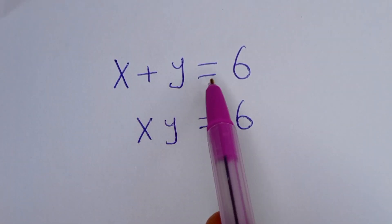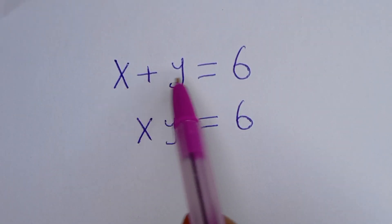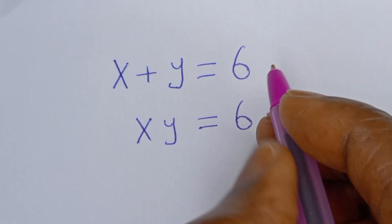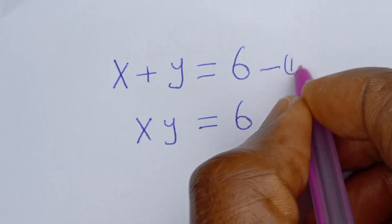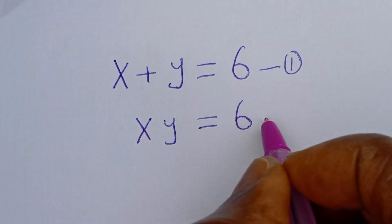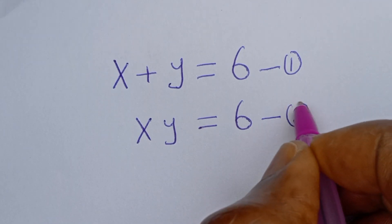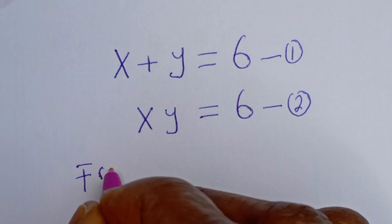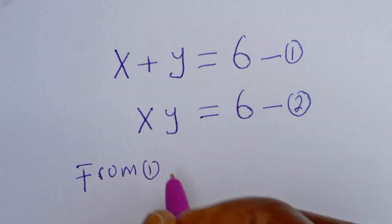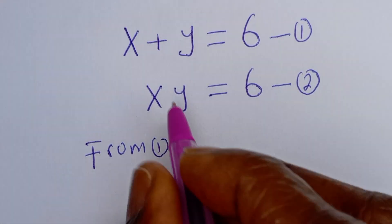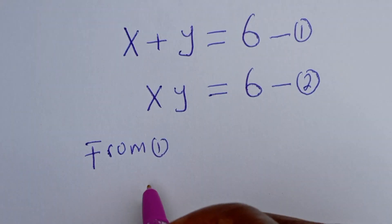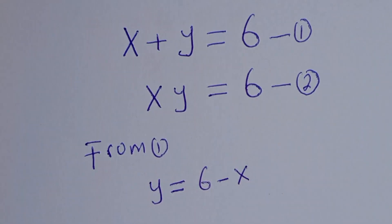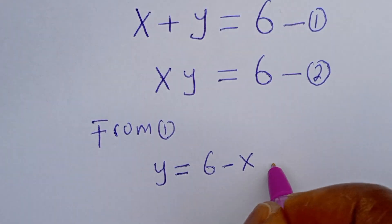Hello. How to solve for s and y in this system of equations: s plus y is equal to 6 — let's call this equation 1 — and s times y is equal to 6 — let's call this equation 2. From equation 1, let's make y the subject of the formula: y is equal to 6 minus s. Let's call this equation 3.